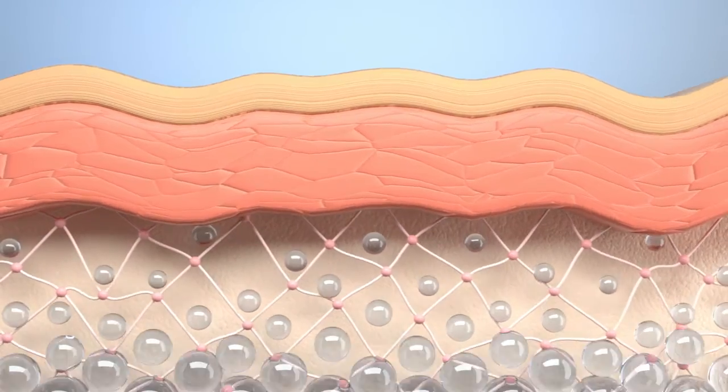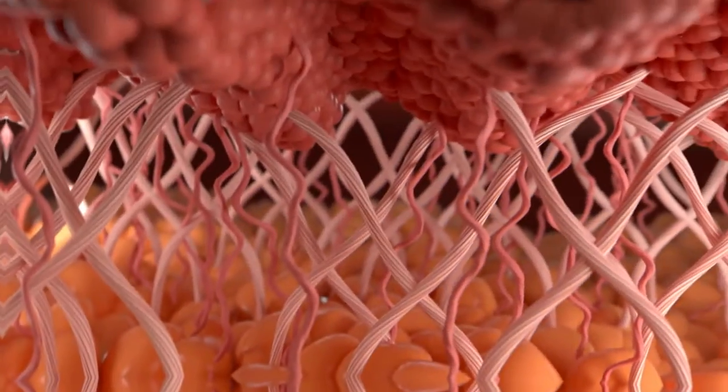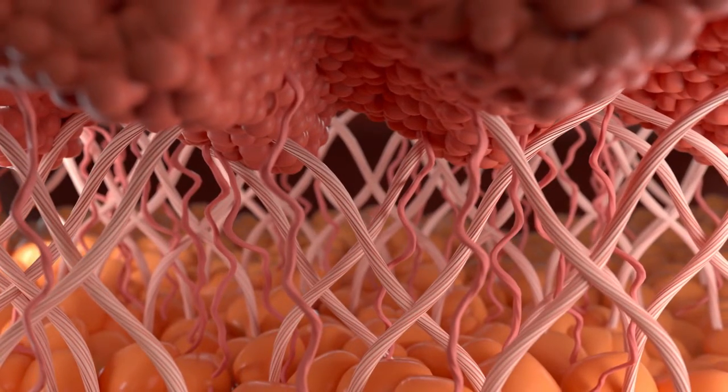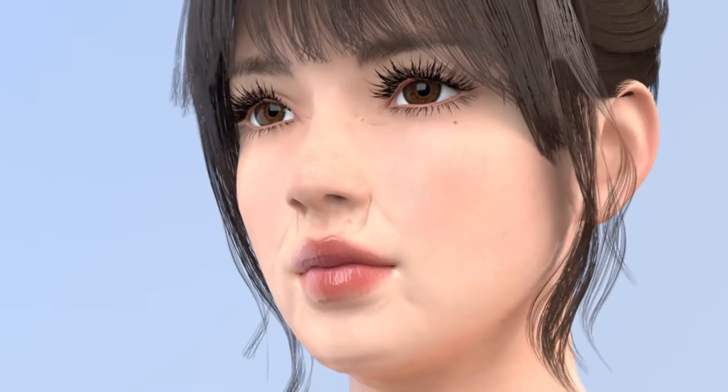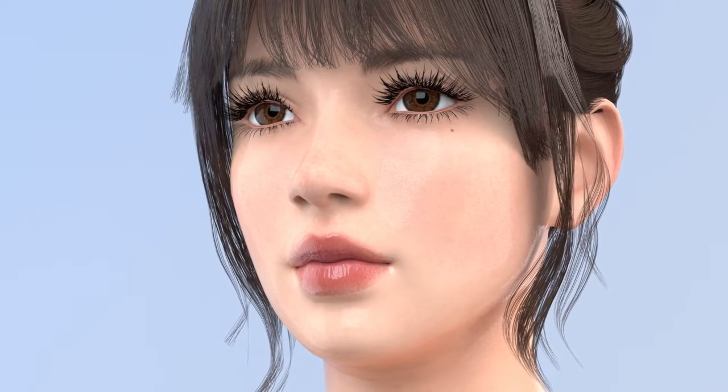When a filler is used, hyaluronic acid seeps into the dermis and draws moisture from the surrounding area, allowing for regeneration 1,000 times its molecular size. This process reduces wrinkles and improves skin elasticity.